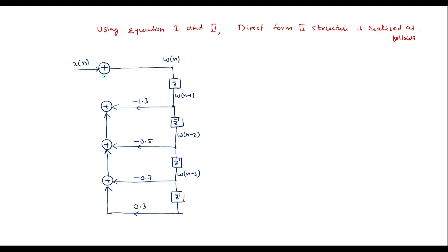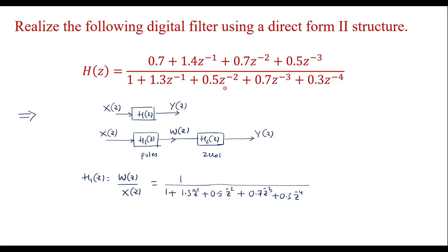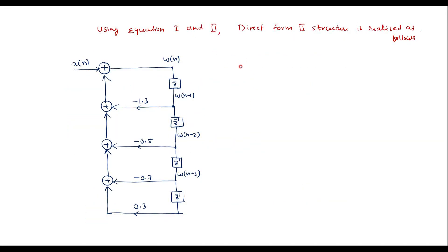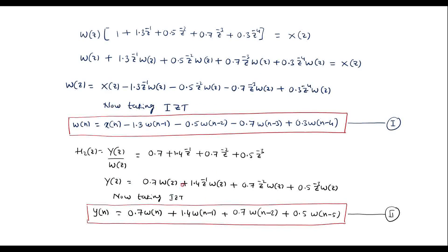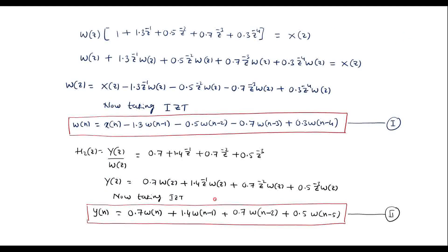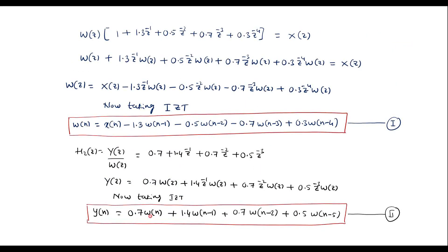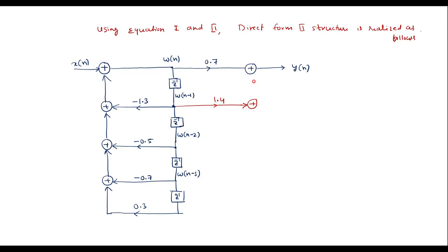This diagram so far is with respect to equation 1. Now for equation 2: y(n) = 0.7 w(n). I will take one adder whose output is y(n). The w(n) signal is available at the input node; multiply it by 0.7 and connect to the adder. Then we have 1.4 w(n−1); the w(n−1) signal is available from the first delay element, so take a tap with coefficient 1.4 and connect it to the output adder.